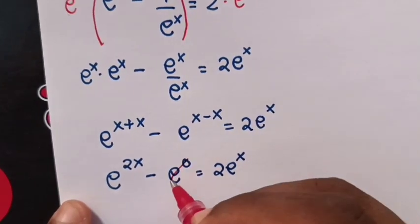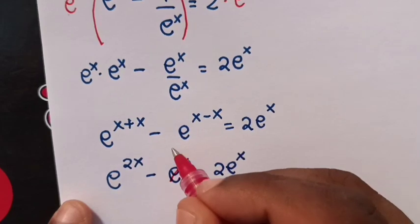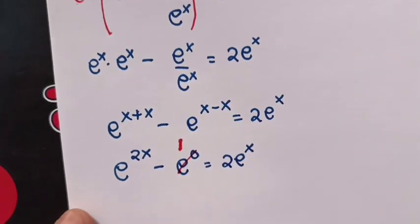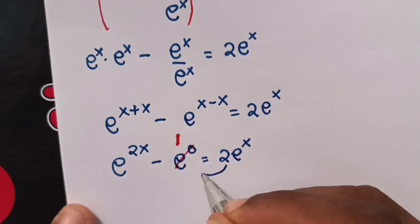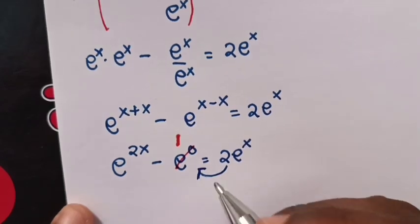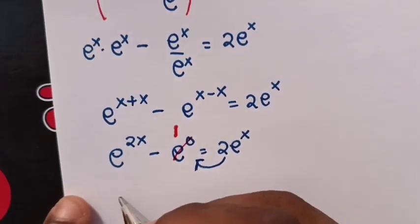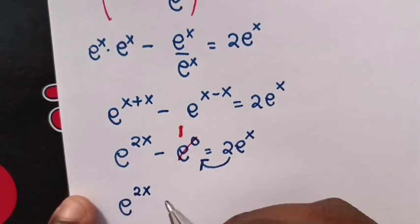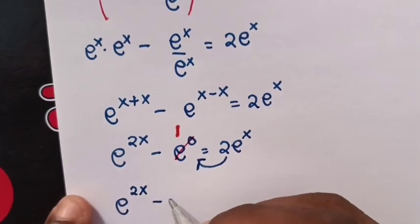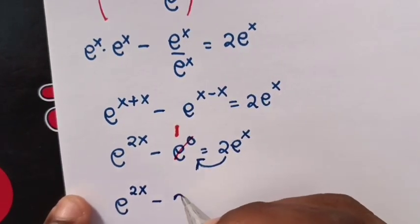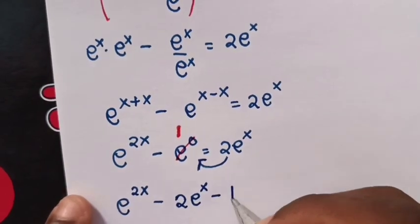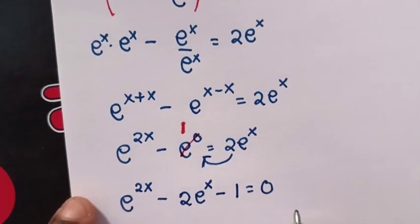Now e power 0 is 1. Then we take 2 e power x to the right side. So our equation becomes e power 2x minus 2 e power x minus 1 equals 0.